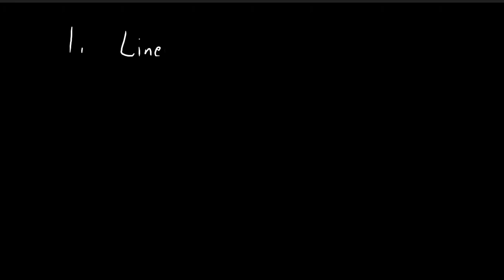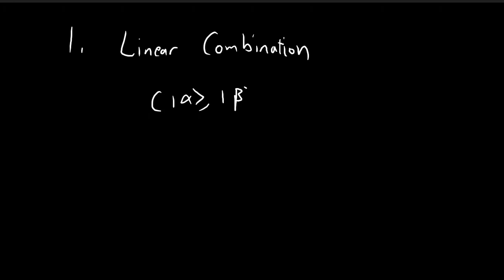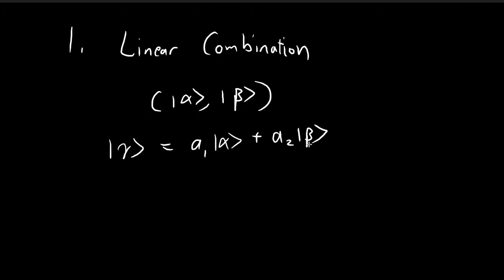The first concept we're going to talk about is the concept of a linear combination. So let's say I have two vectors — I'm going to call them alpha and beta — and another vector called gamma. Gamma is defined as some scalar multiplied by alpha plus another scalar multiplied by beta. This process is what we call a linear combination: we multiply scalars by vectors and then add those vectors together.